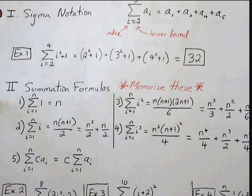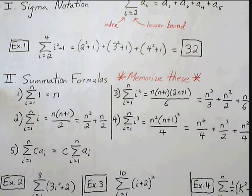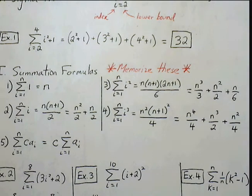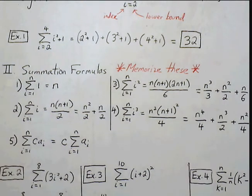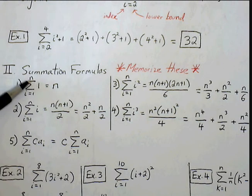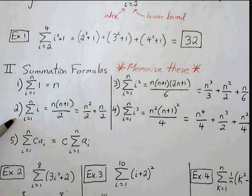Summation formulas - these are shortcut rules that will allow us to find the sum a lot faster if they fall into these categories. First, if I have the summation from 1 to n for just the constant 1, then my sum will just be my upper bound, which is n.